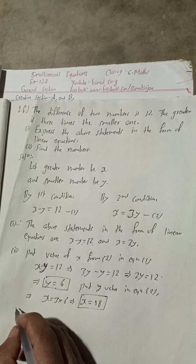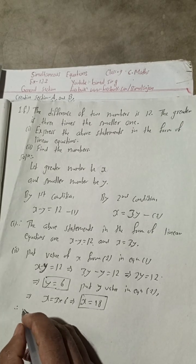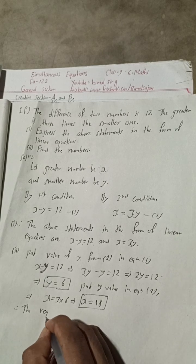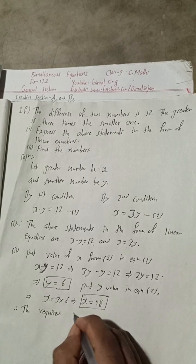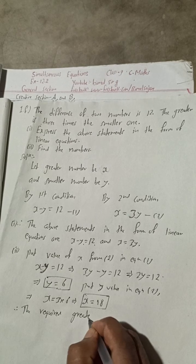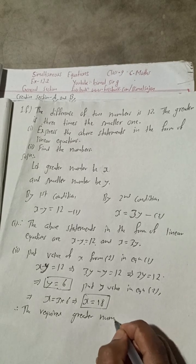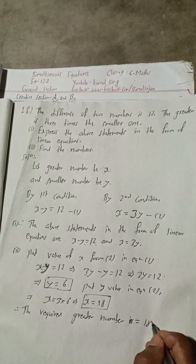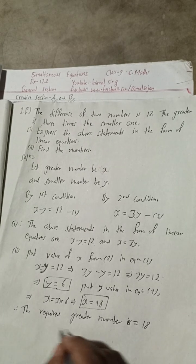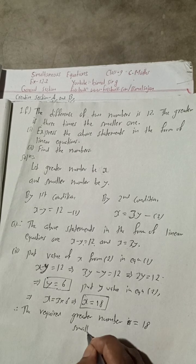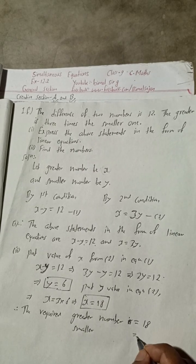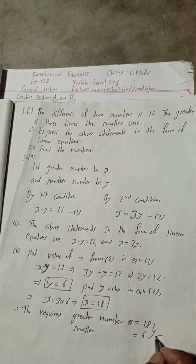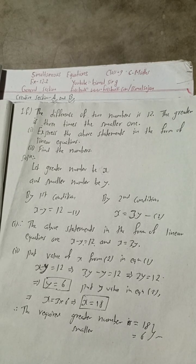Therefore, the required greater number is equal to 18, and the smaller number is equal to 6. This is the complete solution of question 1F.